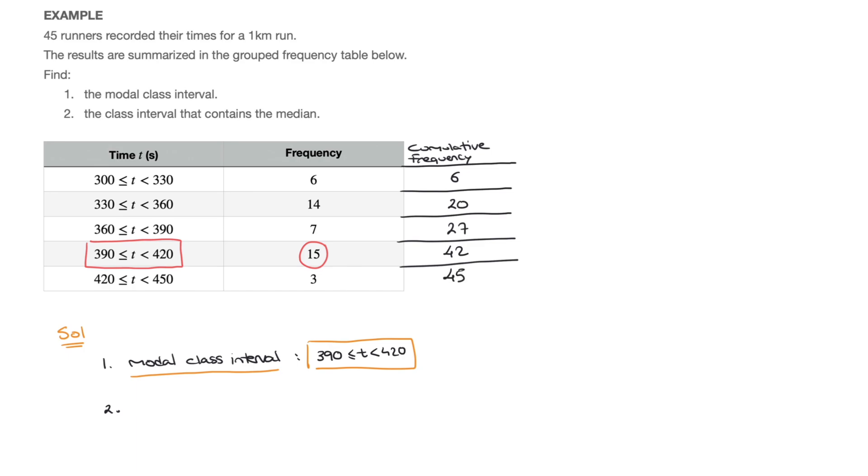And a quick check to always make is that the last value we have in our cumulative frequency column is equal to the sum of all the frequencies. In this case, we were told that there were 45 runners, which clearly tells us that the sum of these frequencies is 45. So this cumulative frequency of 45 is indeed correct. Okay, now that we've added a cumulative frequency column, here's what we can do.